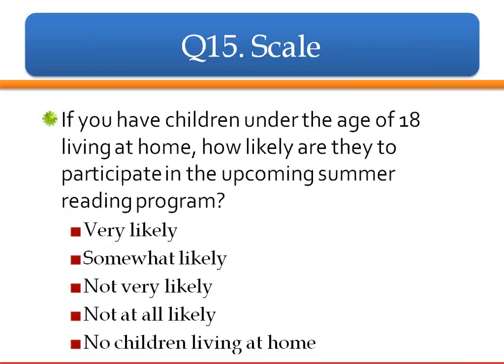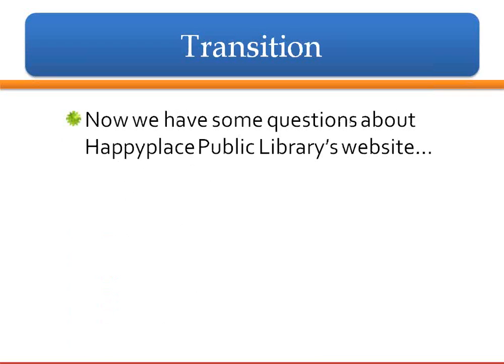Another scale question: 'If you have children under the age of 18 living at home, how likely are they to participate in the upcoming summer reading program?' Use the likelihood scale and give them an opt-out at the end.